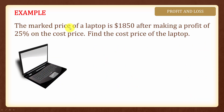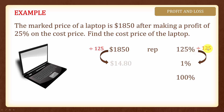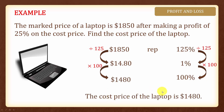In this next example, the marked price, which is the selling price of the laptop, is $1850 after making a profit of 25% on the cost price. Let's start with $1850. Since this price is after making a profit of 25%, this price represents 125%. We are asked to find the cost price, which will be 100%. In order to find 100%, let us first find 1% by dividing both sides by 125. We will have $14.80 represents 1%. To find 100%, we multiply both sides by 100, and the cost price of the laptop is $1480.